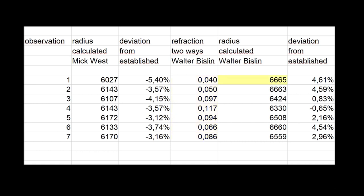6,665, 6,663, 6,424, 6,330, 6,508, 6,660 and 6,559 kilometers respectively. A deviation from the real value of 6,371 kilometers of around minus 0.6 to 4.5 percent.